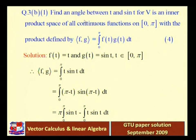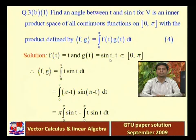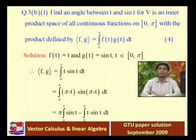Question 3b, first part: Find the angle between f(t) = t and g(t) = sin(t) in the inner product space V of all continuous functions on [0,π], with inner product defined as <f,g> = ∫₀^π f(t)g(t) dt. The key formula is: cos θ = <f,g> / (‖f‖·‖g‖). We need to find <f,g>, ‖f‖, and ‖g‖.